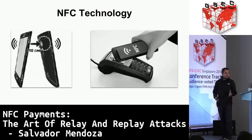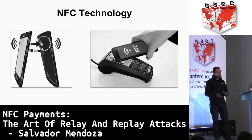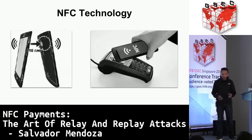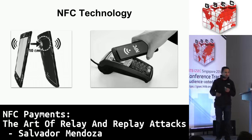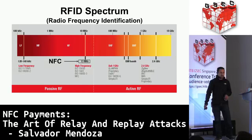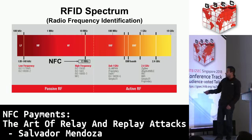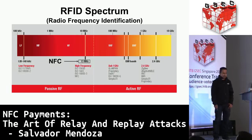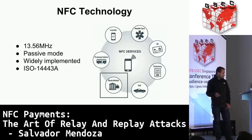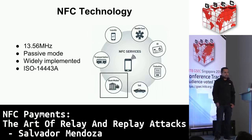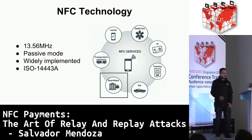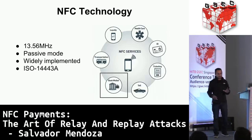NFC technology is a protocol where you need to get close to another device to start communication. The NFC process is very straightforward - you approach the smart card to a terminal, and the terminal gives power to the smart card to start the communication. NFC operates at the passive frequency of 13.56 MHz. Smart cards are passive mode technology, meaning you need to approach the terminal to boot up the card. We're using ISO 14443A for this communication. Even though many technologies use NFC, we're going to be focused just on bank wallets.